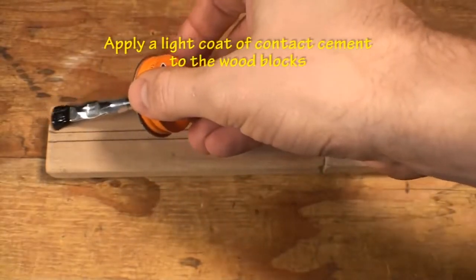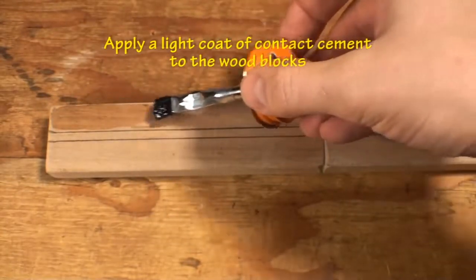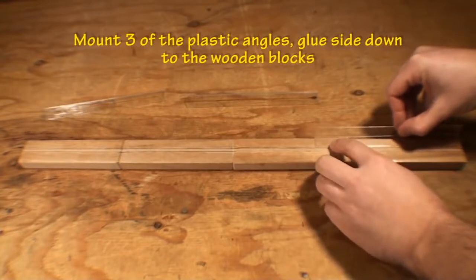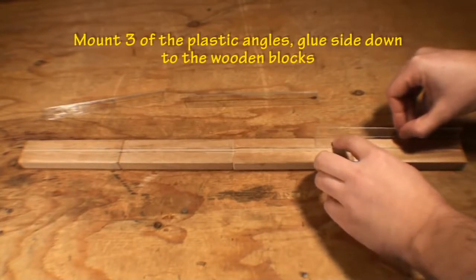Apply a light coat of contact cement to the wood blocks. Mount the first three plastic angles to the top of the wooden blocks.